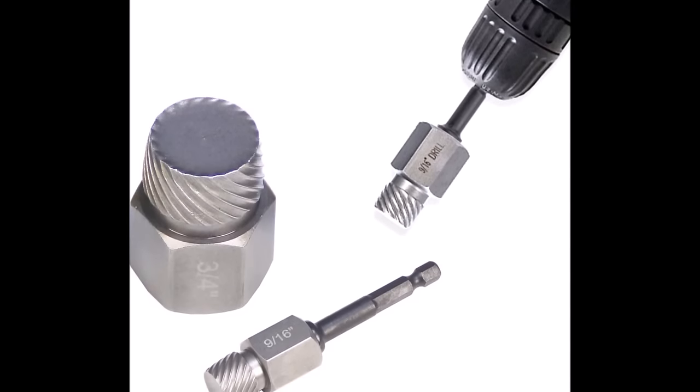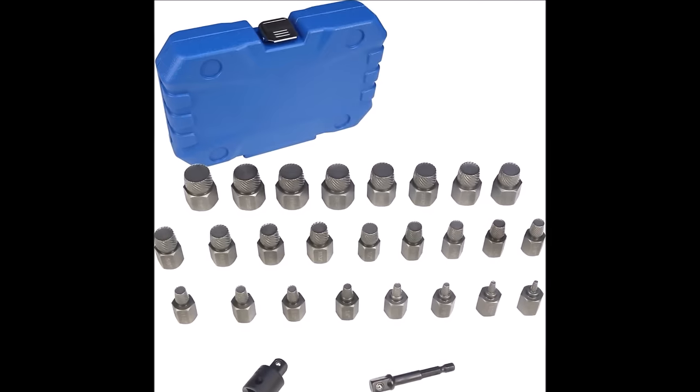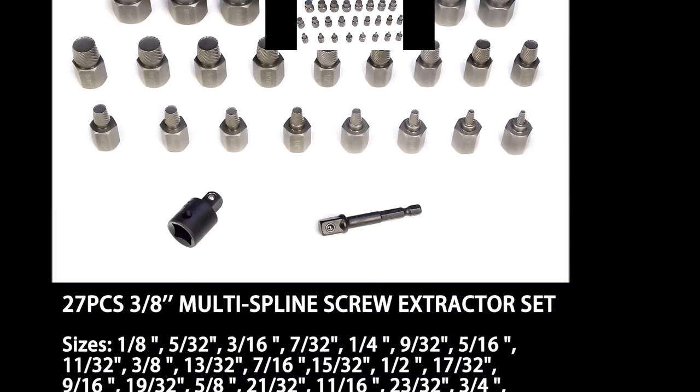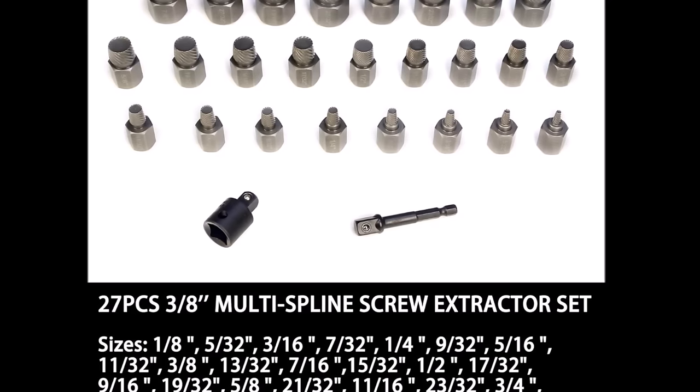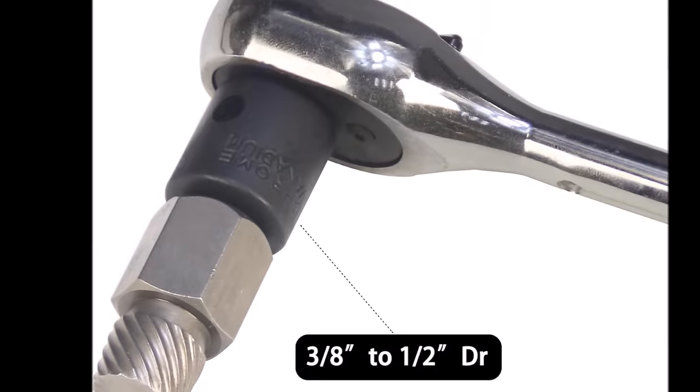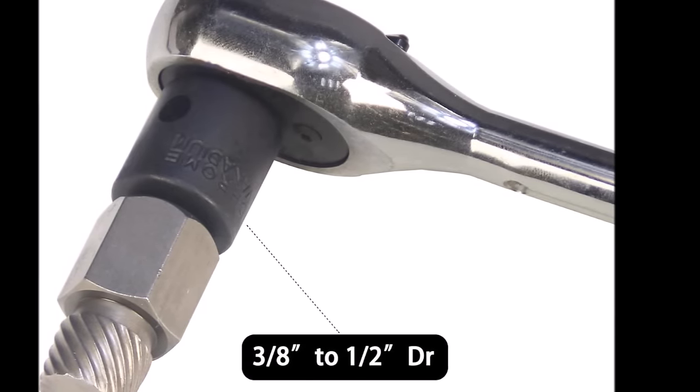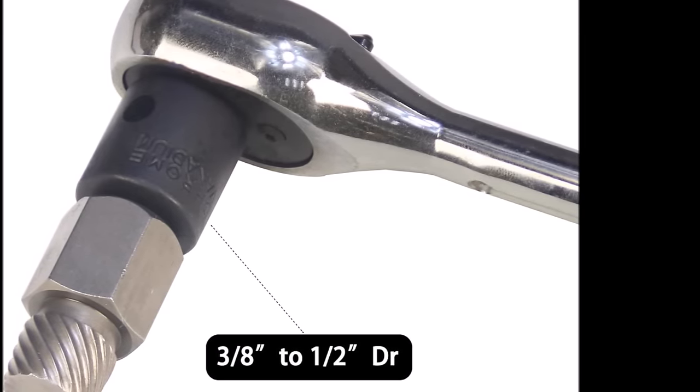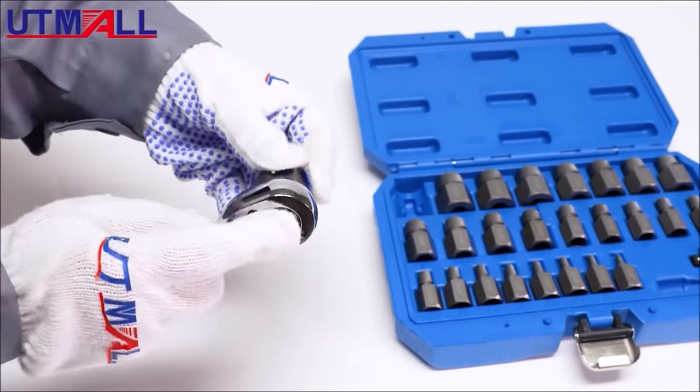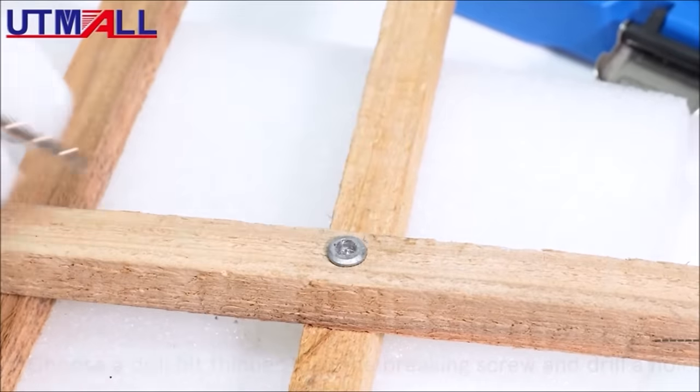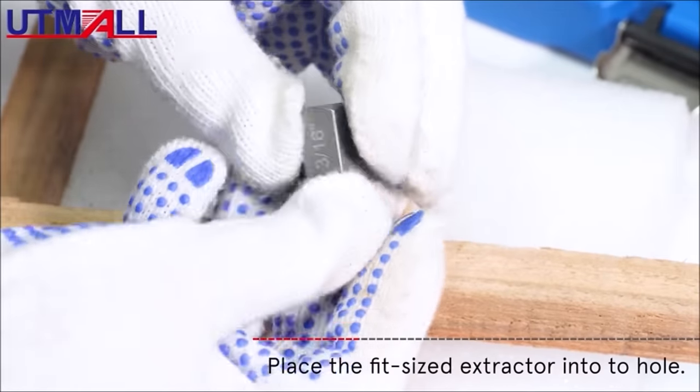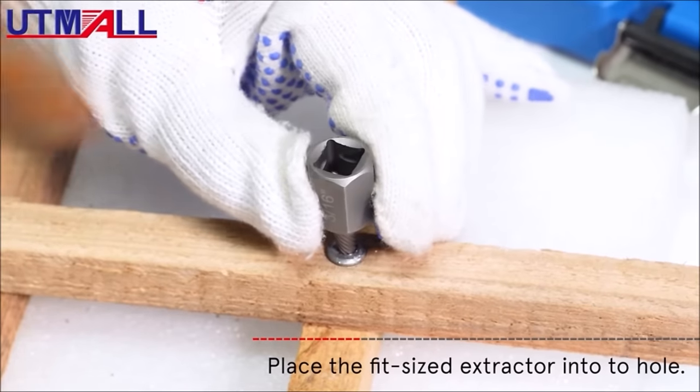The latest version of the set allows direct connection with a wrench, eliminating the need for a connecting sleeve. The extractors feature a reverse thread design that provides maximum grip—the more you turn, the tighter the grip becomes. Constructed from durable high-strength chromium molybdenum steel and coated with a phosphate coating for enhanced corrosion and rust resistance, these extractors are suitable for use with both hand tools and power tools.